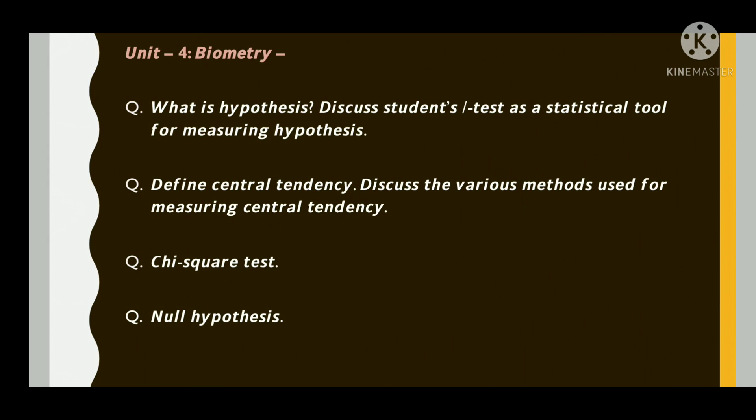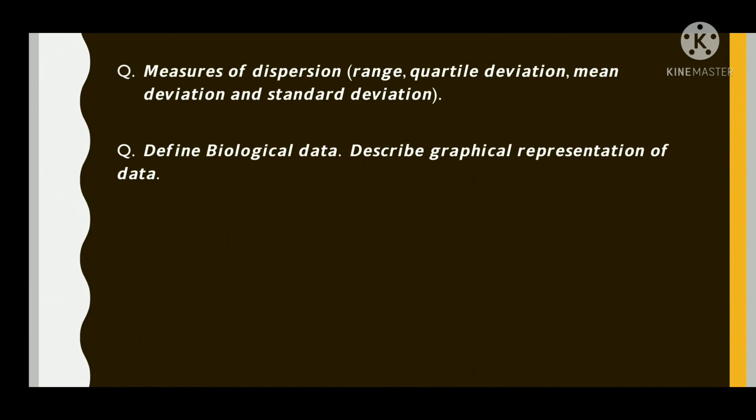For Unit 4, that is biometry, question will be asked as what is hypothesis? Discuss hypothesis. Then define central tendency. Discuss about various methods used in the central tendency. Chi-square test, null hypothesis, measures of dispersion - that is range, quartile deviation, mean deviation, and standard deviation.